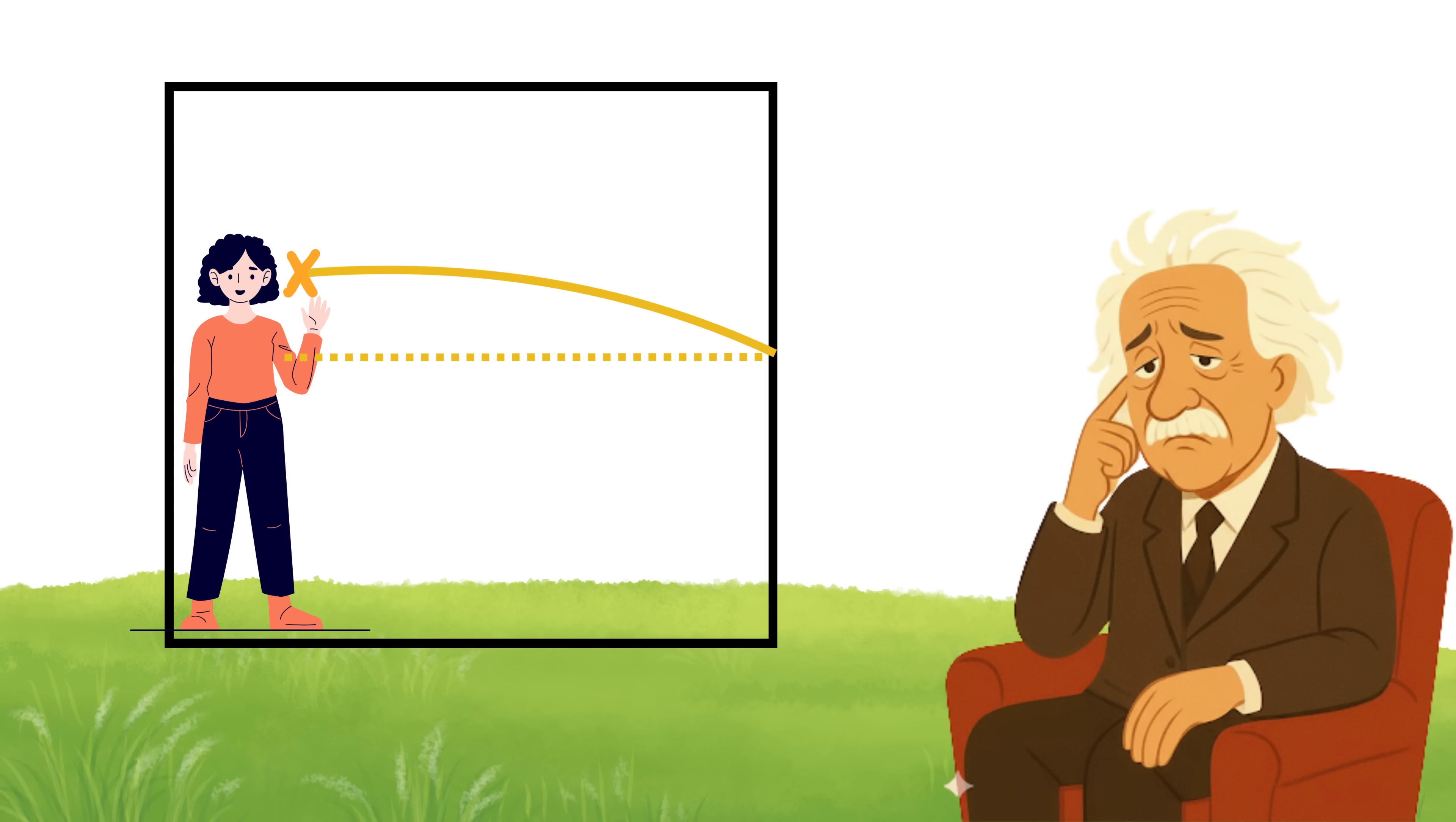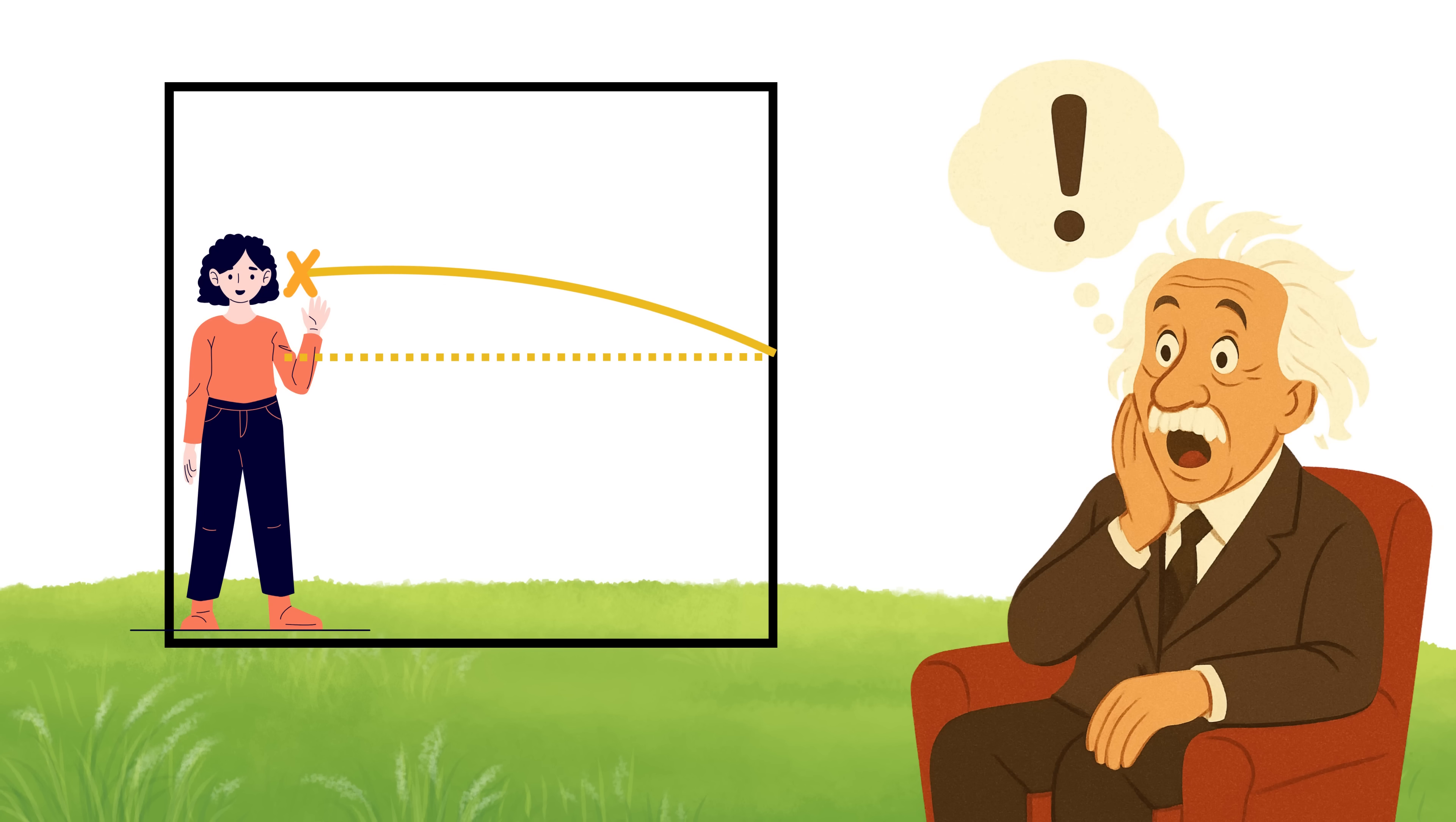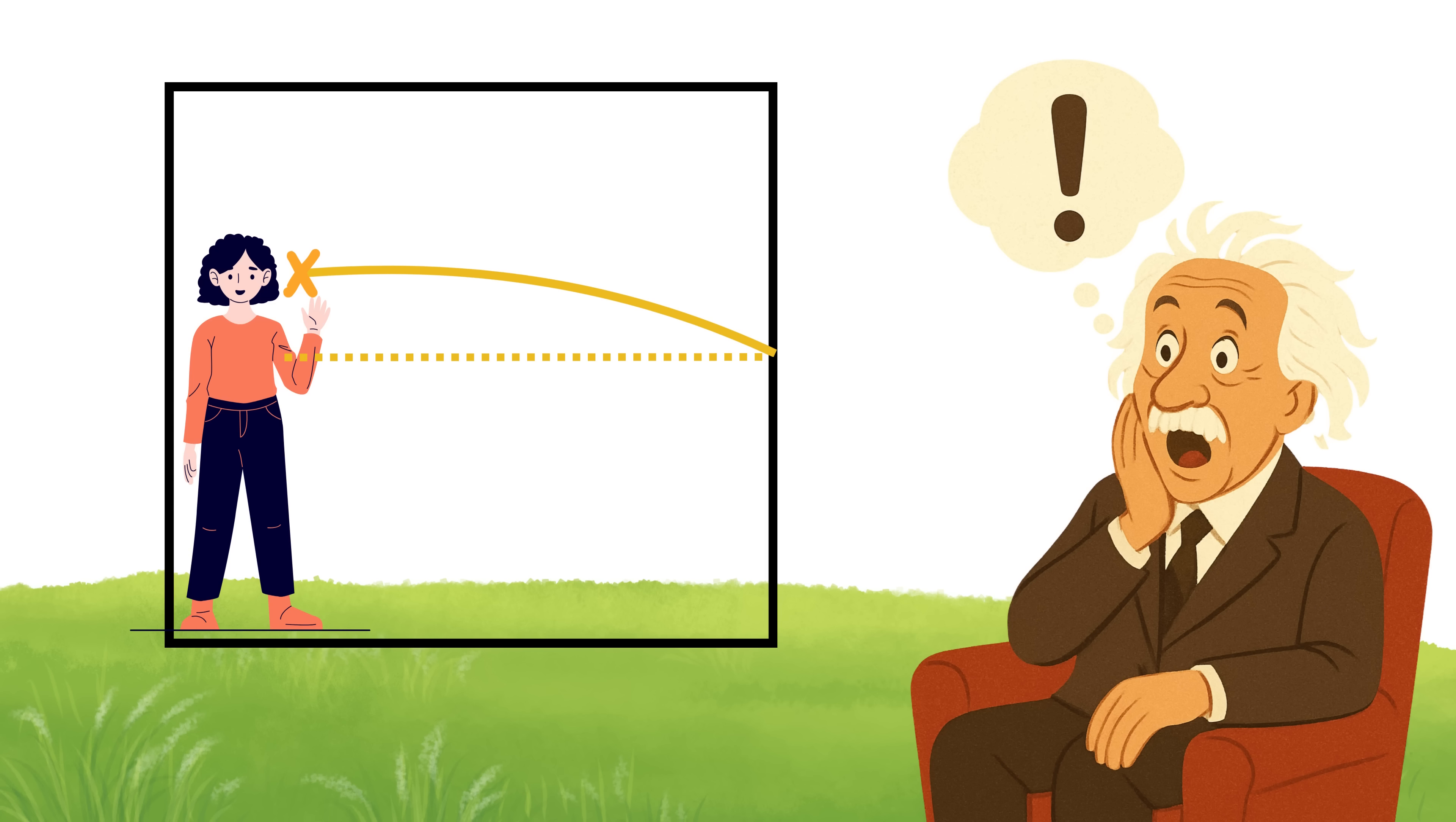That didn't feel right. But then he had a brilliant thought. What if the light wasn't actually bending at all? What if the light was still taking the straightest possible path, but space itself wasn't flat anymore? He imagined that space could be curved, the same way a sheet of paper can be flat or rolled.